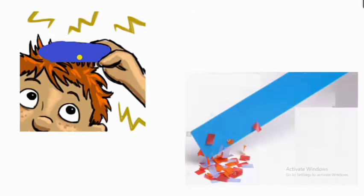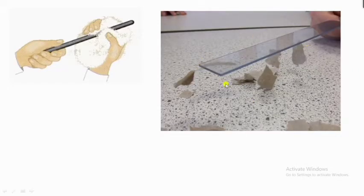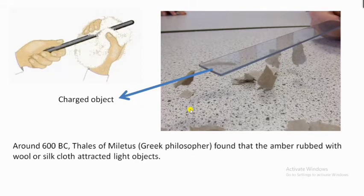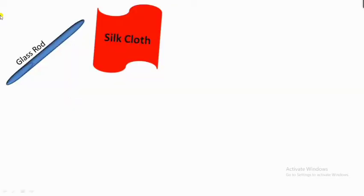You might have observed that when we rub a scale on our head, the scale starts attracting pieces of paper. Charge is the main reason behind this phenomenon. When a glass rod is rubbed with silk cloth, the glass rod starts pulling pieces of paper — this happens because the object is charged. This was first observed by the Greek philosopher Thales around 600 BC, who found that when amber was rubbed with silk cloth, the amber starts attracting pieces of paper.